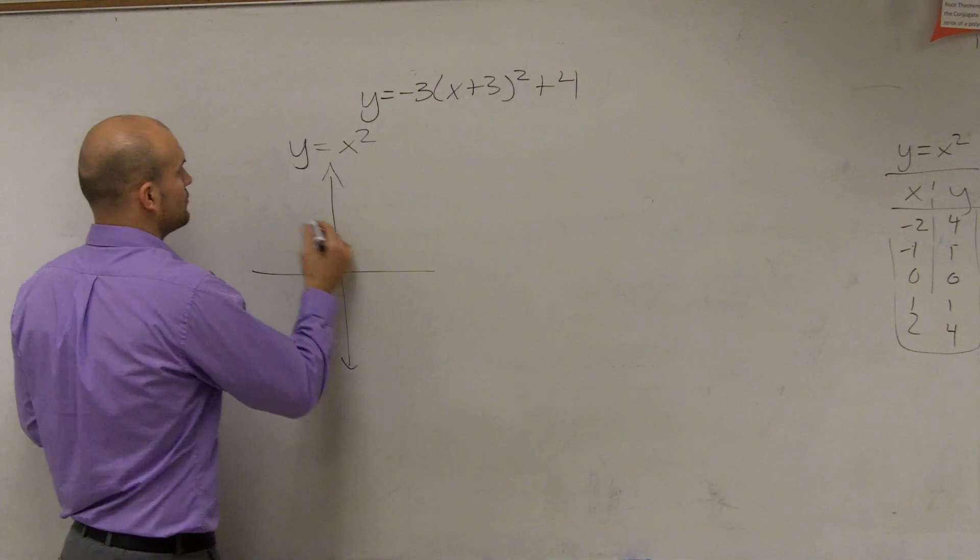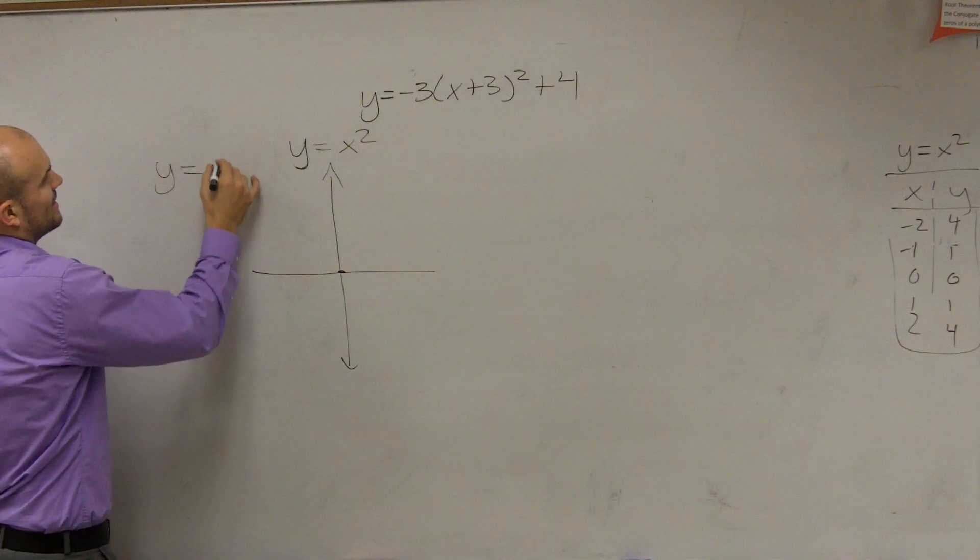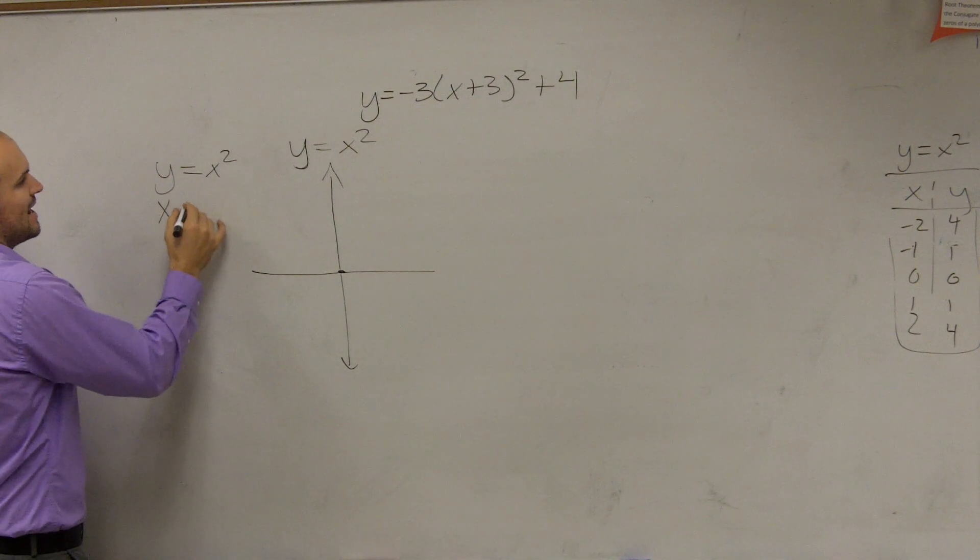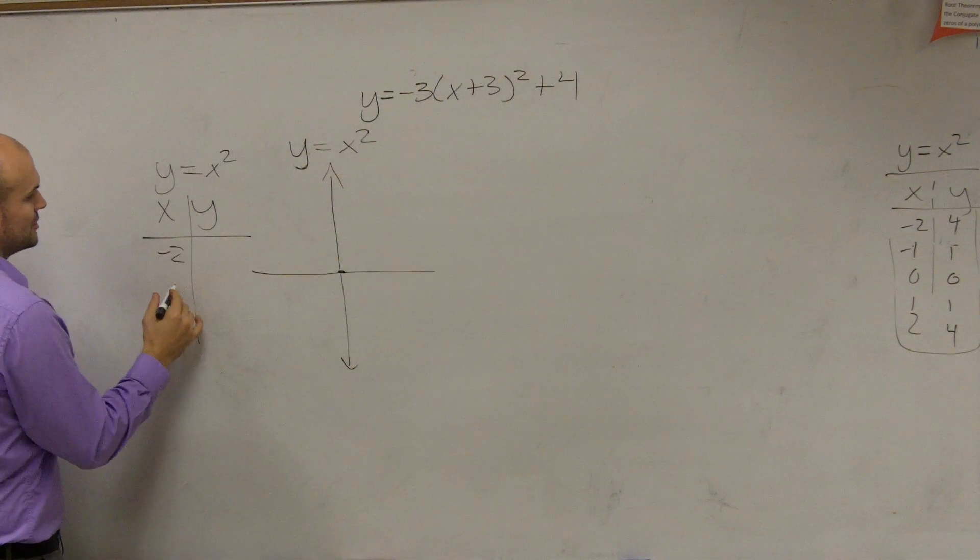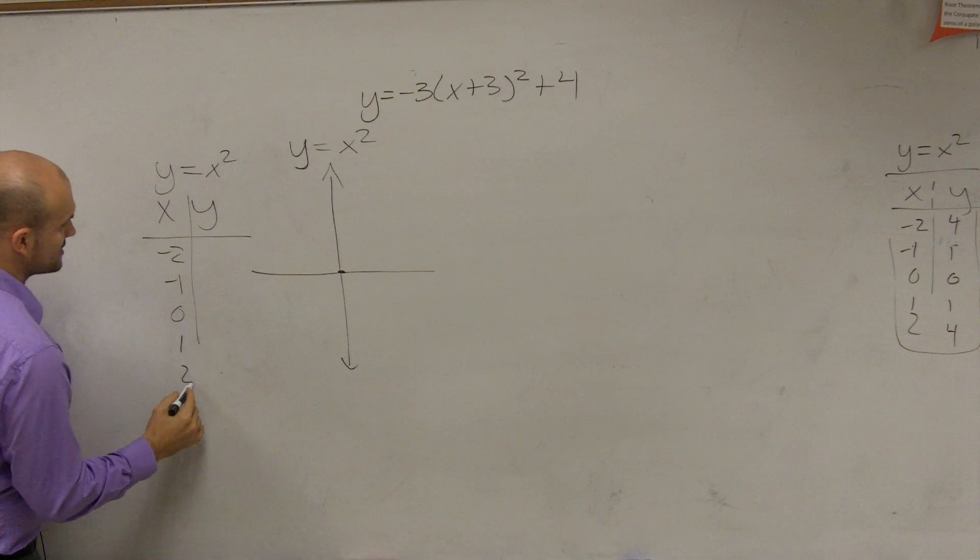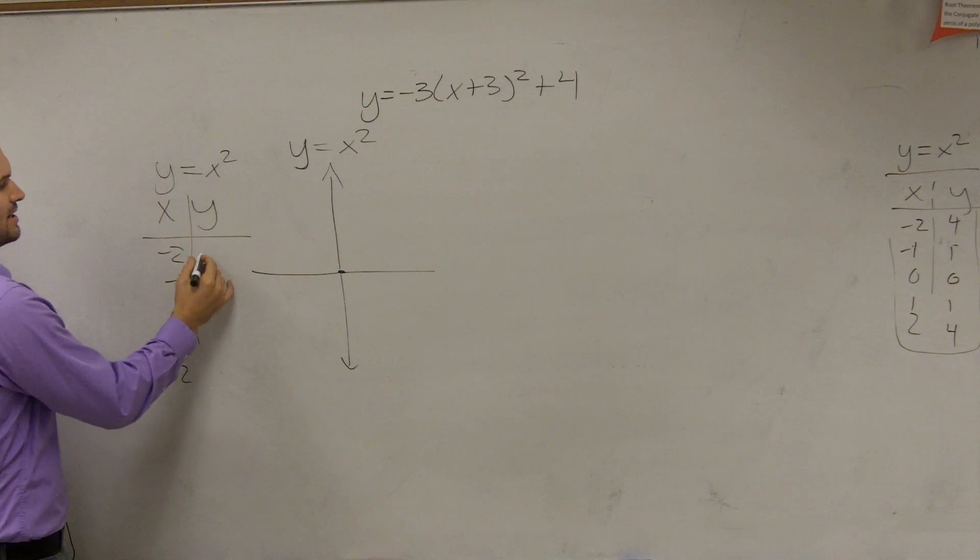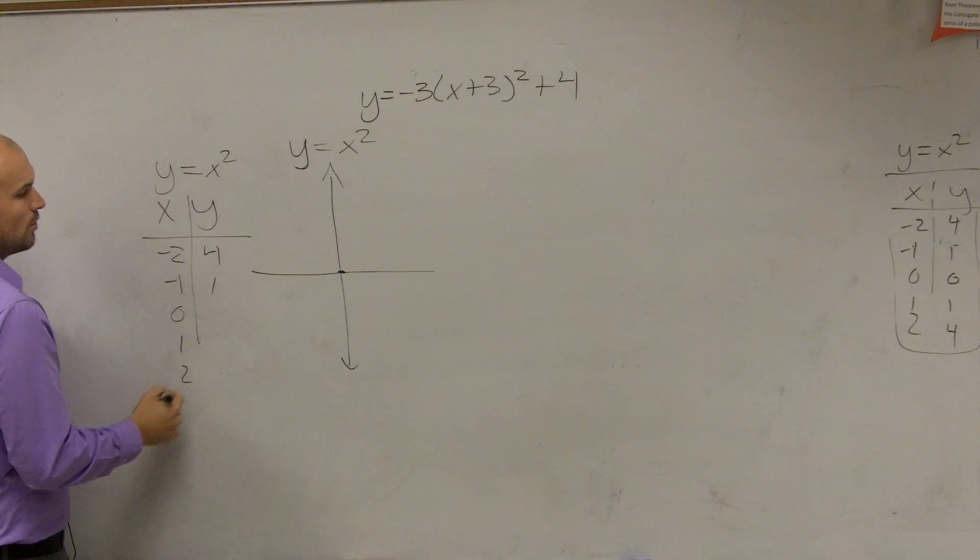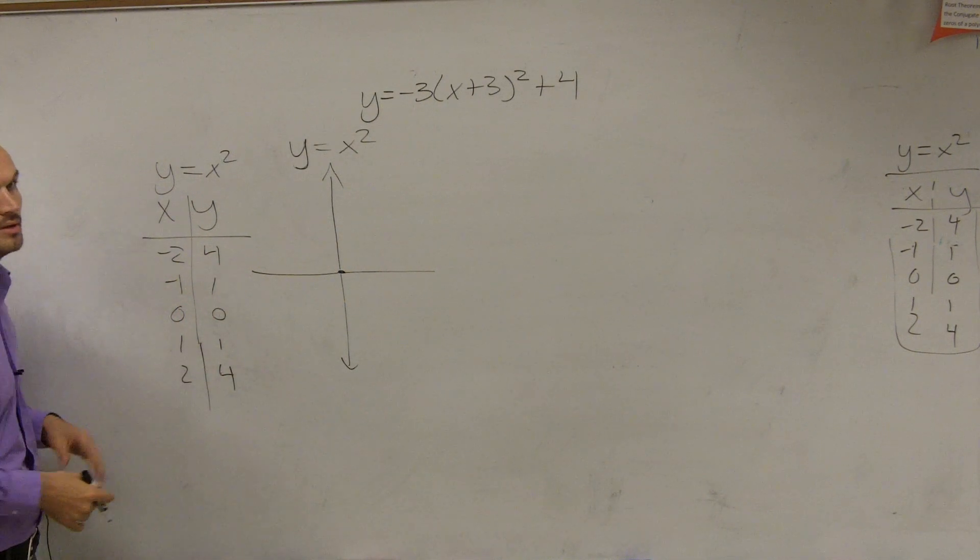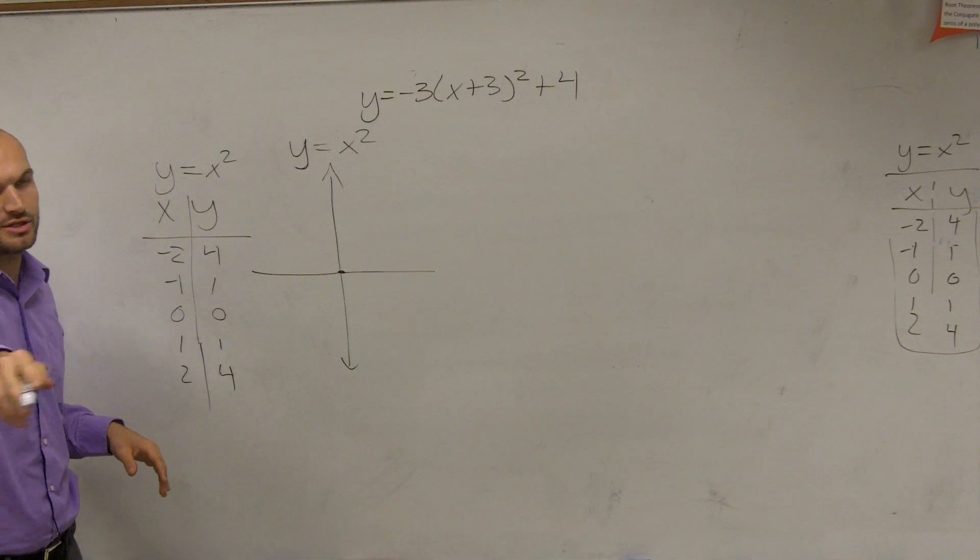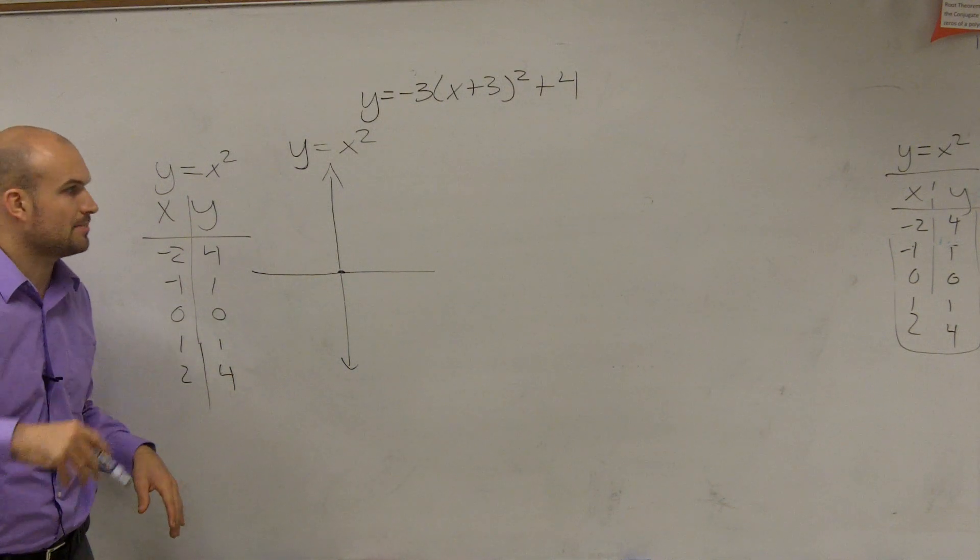Now we could represent this with a table to remember what it looks like. If we did y equals x squared, an xy table for this graph, I'm just going to do a couple points. Negative 2, negative 1, 0, 1, and 2. Negative 2 squared is 4, negative 1 squared is 1, 0 squared is 0, then 1 and 4. That's using the old method. You're going to turn it into the black box and you'll be fine.